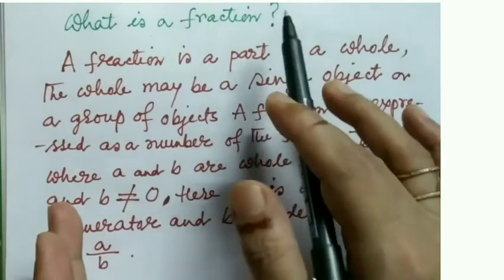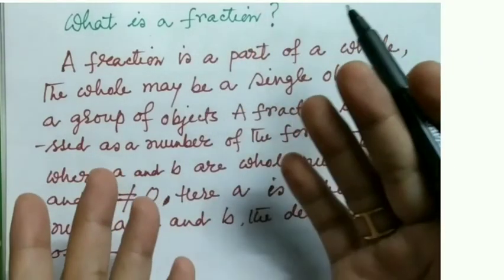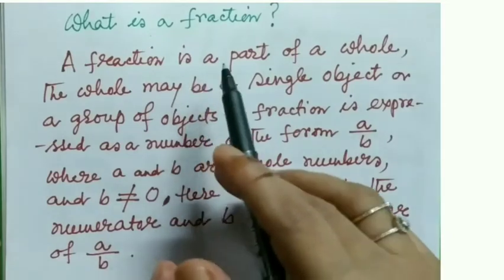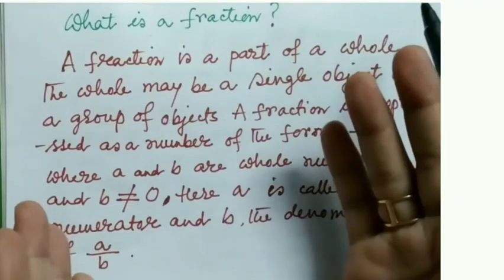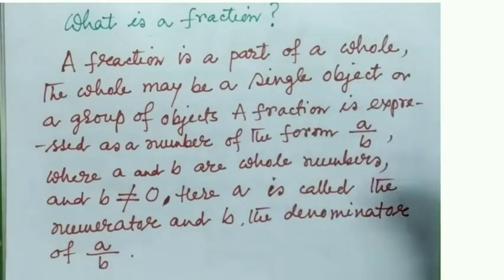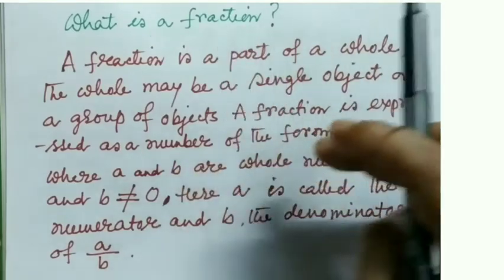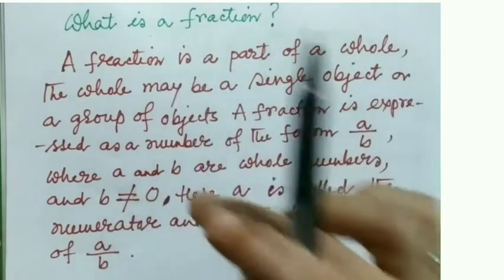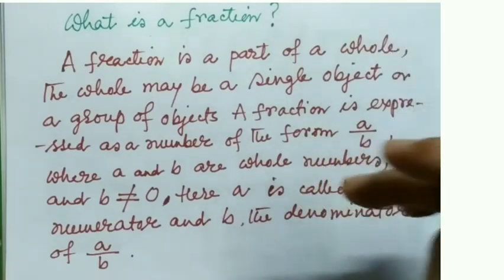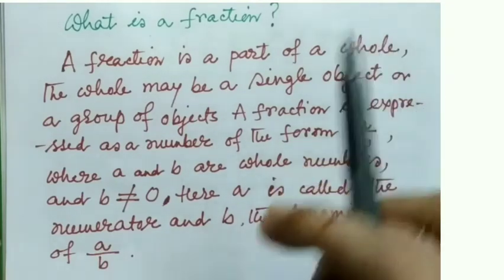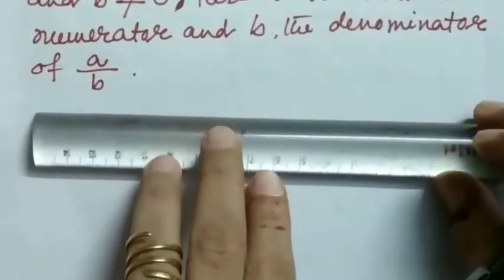What is a fraction? We all know more or less about fraction. Fraction is simply a part of a whole. The whole may be a single object or a group of objects. A fraction is expressed as a number of the form a by b, where a and b are whole numbers and b is not equal to 0. Here a is called the numerator and b is called the denominator of a by b.